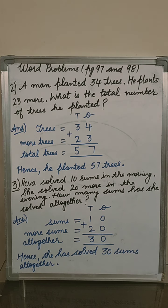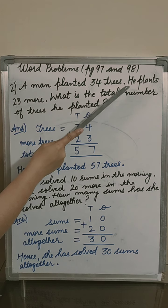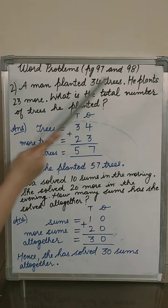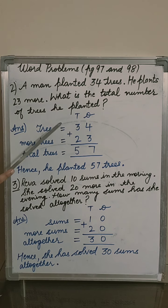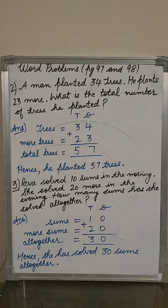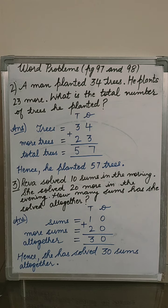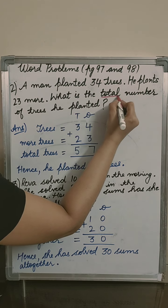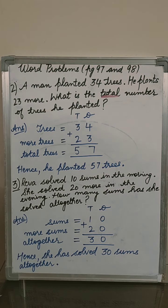Next question, question number 2. A man planted 34 trees. He plants 23 more. So what is the total number of trees he planted? Planted means he planted the plants. How many did he plant? 34. And later, how many more? 23. So what is the total number of trees? The keyword here is total. Total means that you have to add.